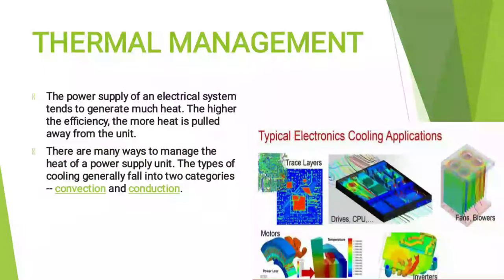The power supply of an electrical system tends to generate much heat. The higher the efficiency, the more heat is pulled away from the unit. There are many ways to manage the heat of a power supply unit. The types of cooling generally fall into two categories: convection and conduction.